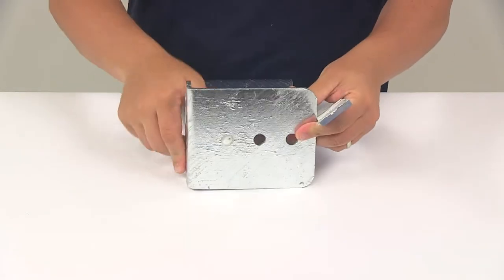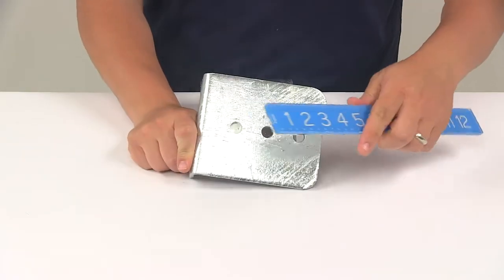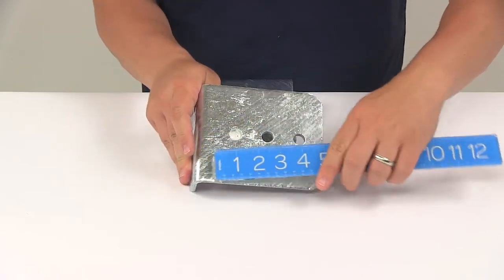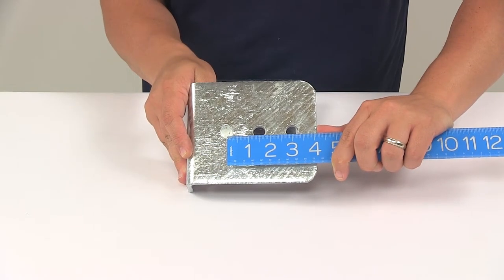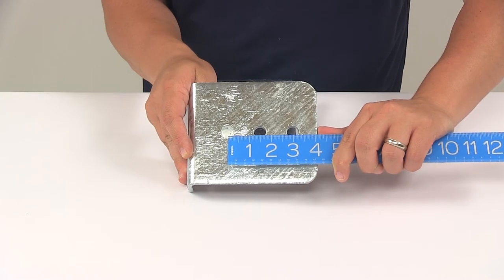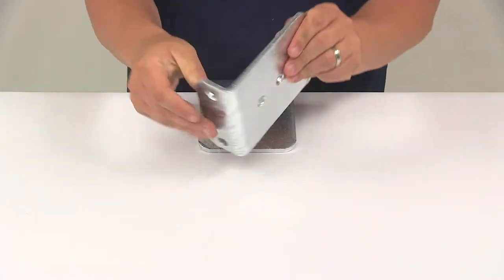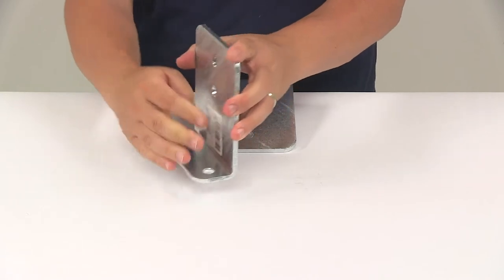The distance between the bunk board mounting holes, again there's three of those. Those are going to be separated on center apart from one another. Each one looks to be an inch and a half apart from the other. Then the plate thickness is a quarter inch thick steel.